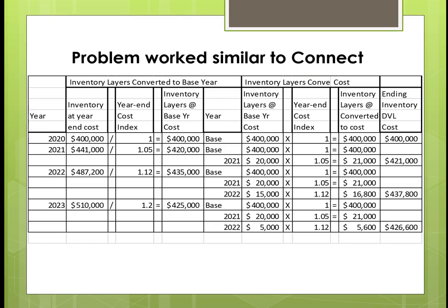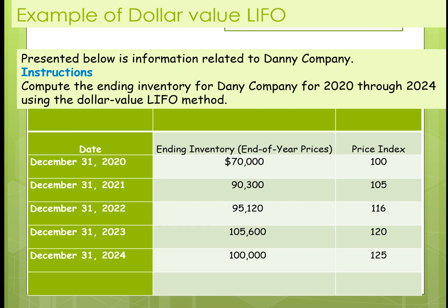This is what it would look like if you were doing your homework. Remember: when you don't use a base index — like the 1.20 — you can't use it. Once the units associated with that layer are gone, you can't use it. Now, here is another example of Dollar Value LIFO. In this one, we have the indexes given for five years, and I'm going to work through all five years to show you how this works.